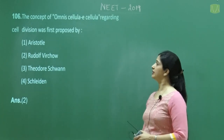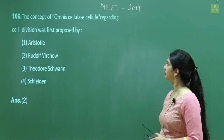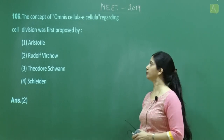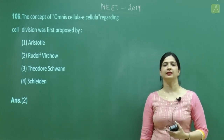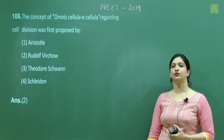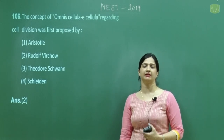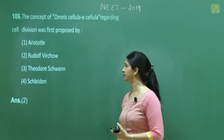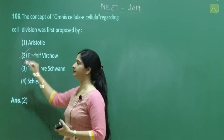Question number 106: The concept of 'Omnis cellula e cellula' regarding cell division was first proposed by Rudolph Virchow. This is also known as the cell lineage theory — new cells arise from pre-existing cells. The correct option is 2.